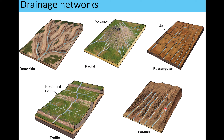Parallel drainage would occur if water is running off a mountainside or mountain range where valleys already existed — for example, at a continental collision location. If these valleys already existed, water would accumulate there and end up looking like very parallel lines, instead of something dendritic where all streams meet up into one.